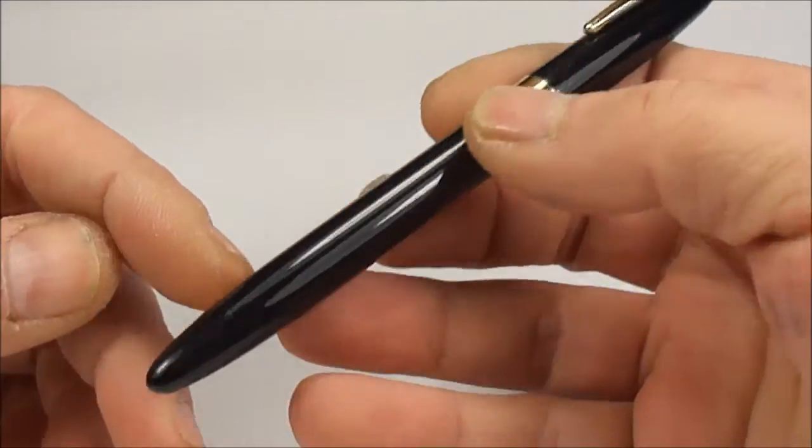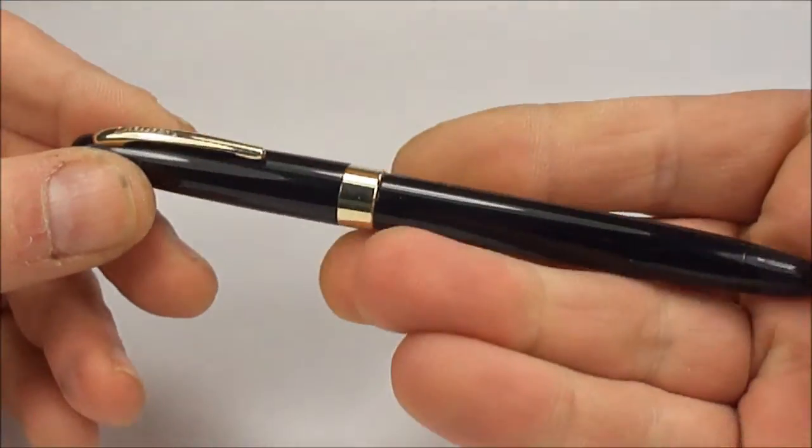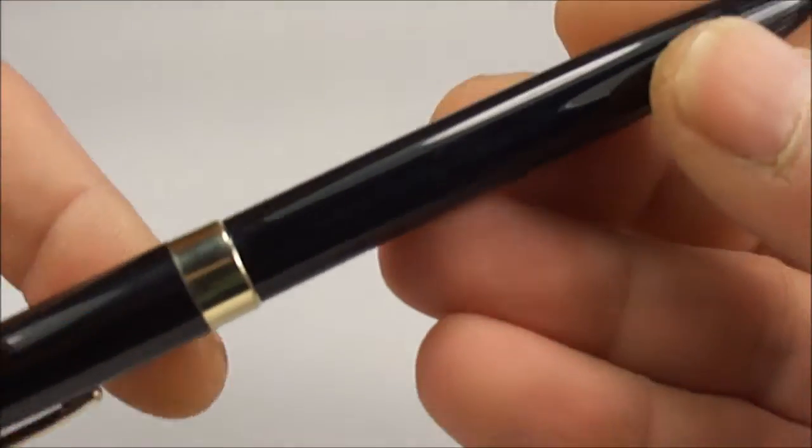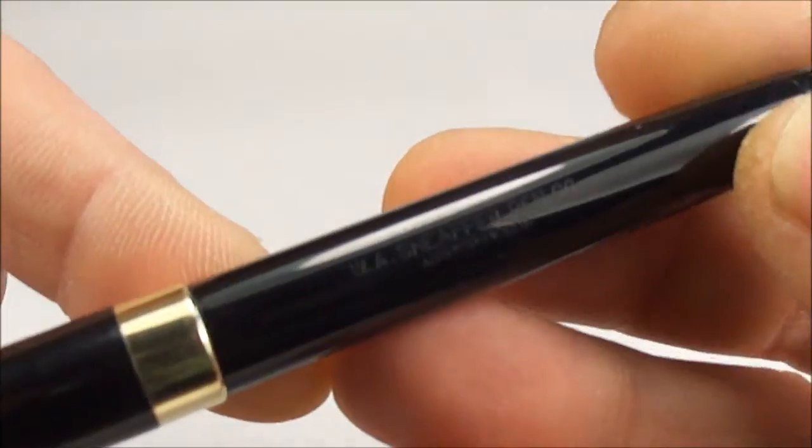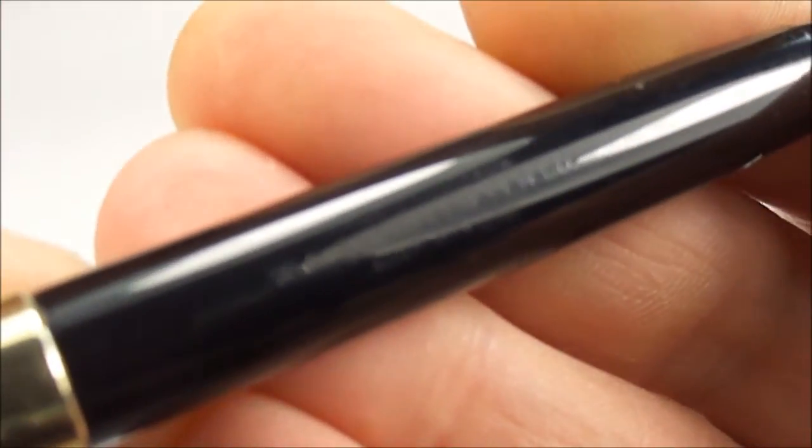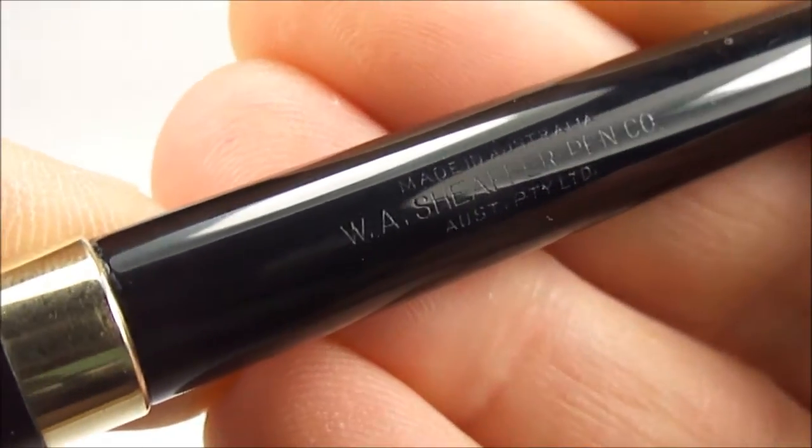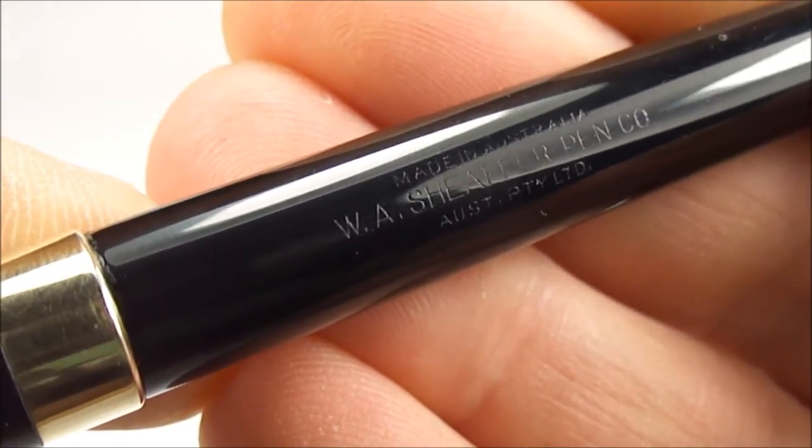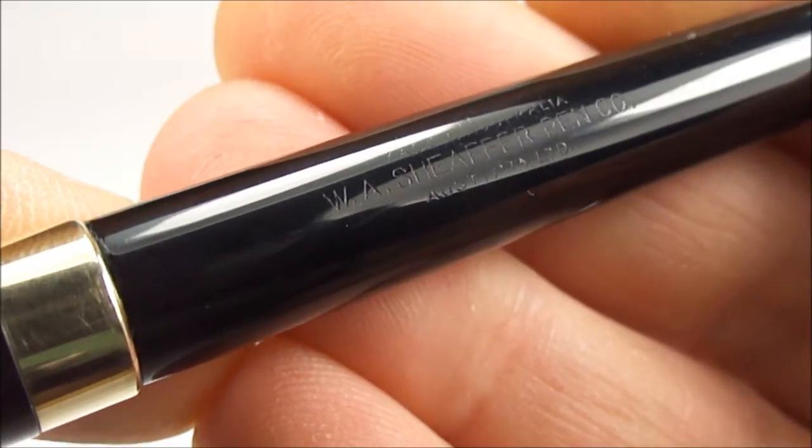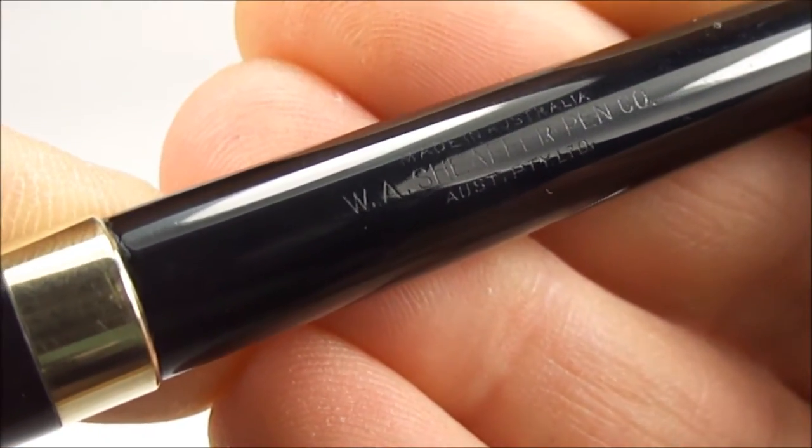This is, as we said, the snorkel. It comes in this classic black and the pen is actually made in Australia. If we show you the barrel imprint there you'll notice it says made in Australia and then it says I think it's WA Schaefer Pen Company and then it has the patent number underneath.